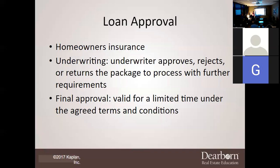Underwriting — this is the biggest one. The initial person your client deals with, often a mortgage banker or mortgage broker, is not going to be the same person who approves the loan. The underwriter is the final authority for either approving, rejecting, or returning the package to process for further requirements. Sometimes they'll reject it, sometimes they'll send it back for changes, and sometimes they'll approve it.